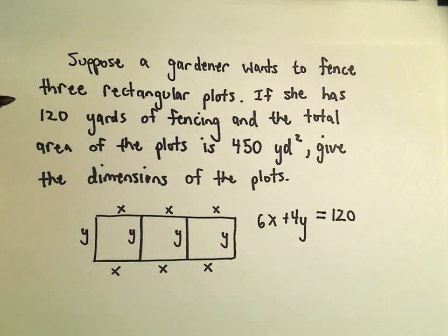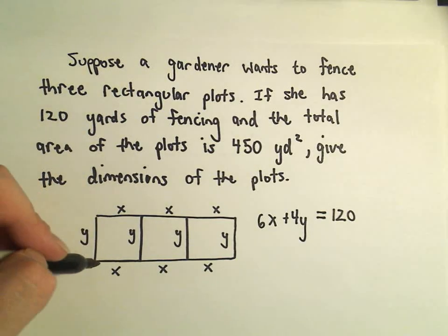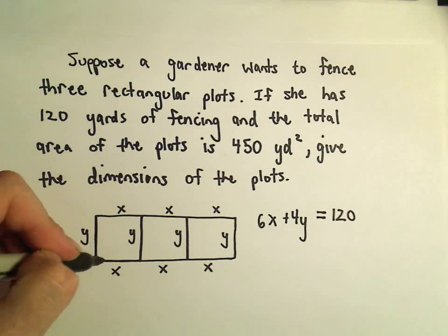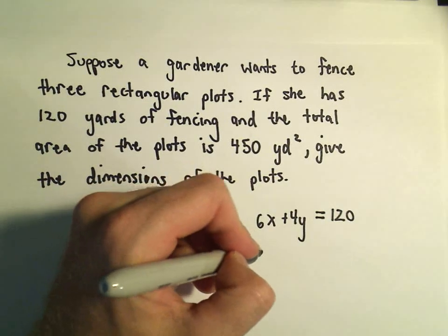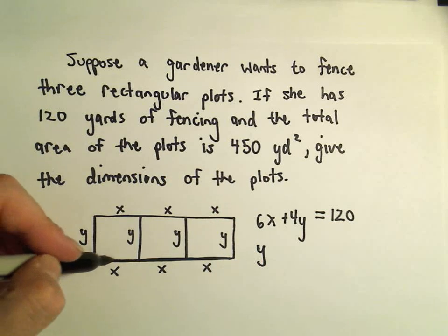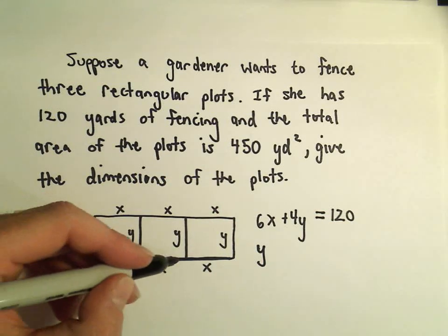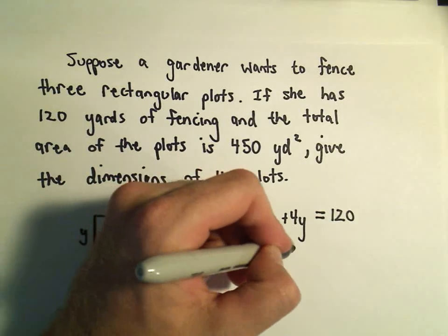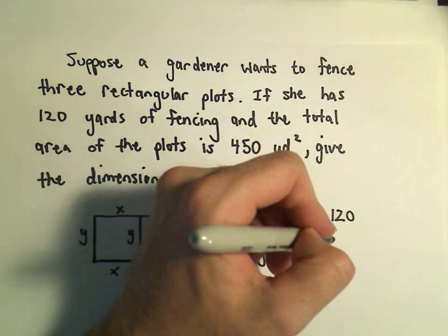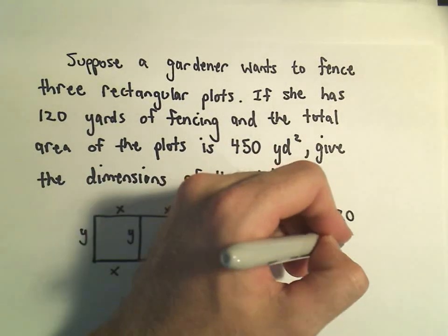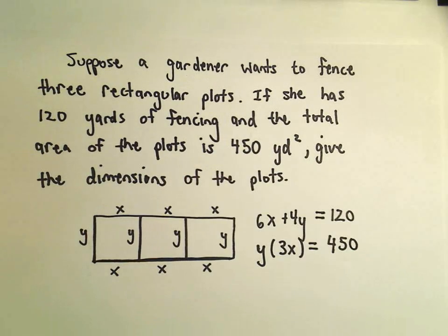And if you think about the area, that's just going to be the height times the total width. So the height is y. The total width would be 1x plus 1x plus 1x, or 3x. And we know that has to equal 450 total.